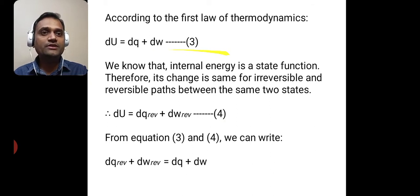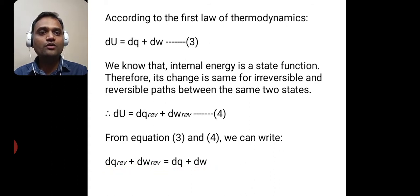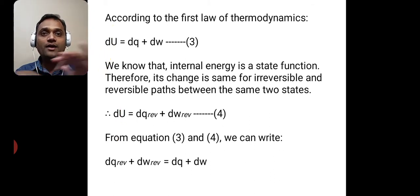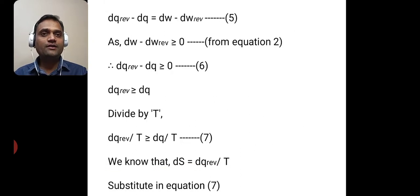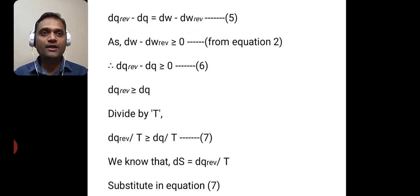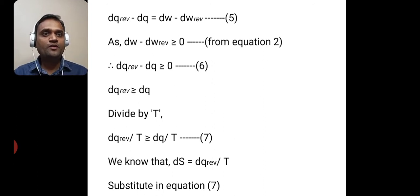From equations 3 and 4, we can write: dq reversible plus dw reversible is equal to dq plus dw, because both are equal to du, and therefore they are equal. Rearranging this equation, we get dq reversible minus dq is equal to dw minus dw reversible. This is equation 5.